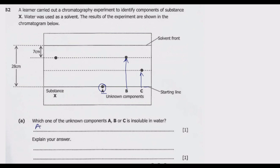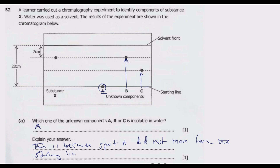So A is insoluble in water. This is because A does not move from the starting line. So the principle is: if a spot does not move and remains on the starting line, then it is insoluble in the solvent used.